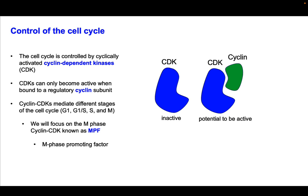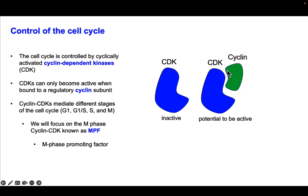The cell cycle is controlled cyclically by proteins called cyclin-dependent kinases. These are kinases, which means they take ATP, pull off one phosphate, and add it to a substrate. CDKs — short for cyclin-dependent kinases — can only become active when bound to a regulatory protein called cyclin, shown here in green. When bound to a cyclin, the CDK has the potential to be active.